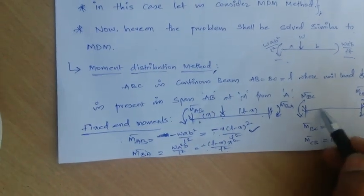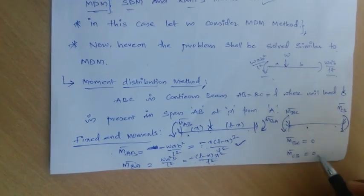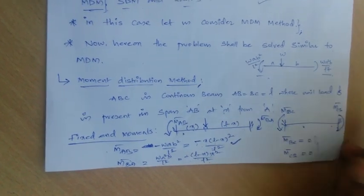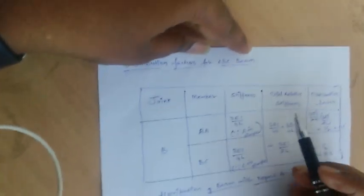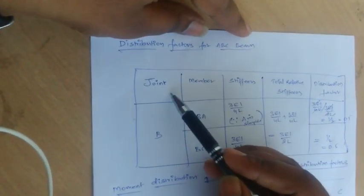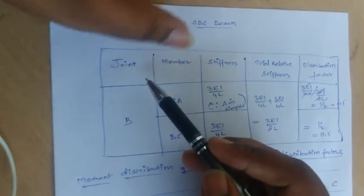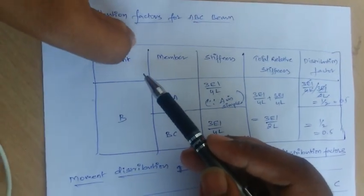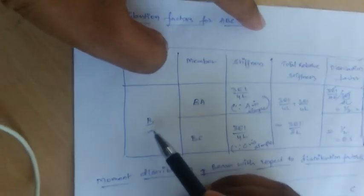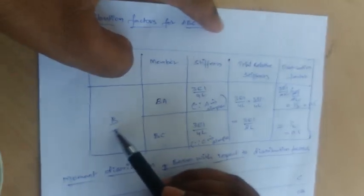Since there is no load in span BC, the fixed-end moments for BC are zero. For the distribution factors at joint B — the only common joint — member B-A and member B-C both have far-end simple supports, so their relative stiffness is 3EI/4L each, giving a total relative stiffness of 3EI/2L.